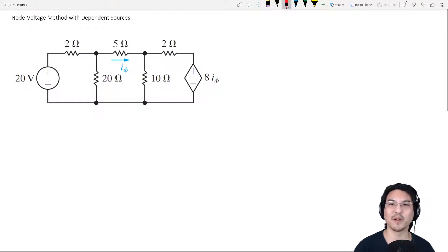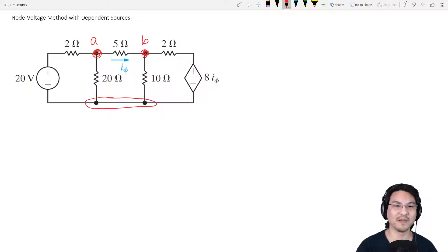Where are the essential nodes? Not here. Here, I'll call that node A. Here, I'll call node B, and over here I'll call that node C. Now, where do you want to pick your reference? Node A has three elements connected to it, node B has three, node C has four. So why don't I pick node C as my reference?